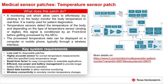The key system requirements for temperature sensor patches are: low cost for disposable patches; highly accurate sensor for correct temperature measurements within the specified body temperature range; small form factor for easy incorporation into wearable applications; efficient, low power, and battery management to provide longer battery life for quick data transfer and real-time monitoring; and wireless connectivity to remotely monitor temperature changes. A common block diagram for a temperature sensor patch is also shown in the slide.